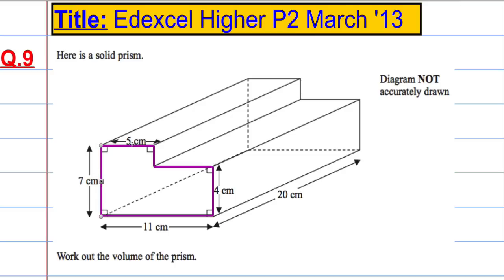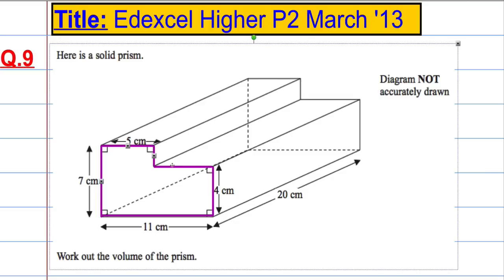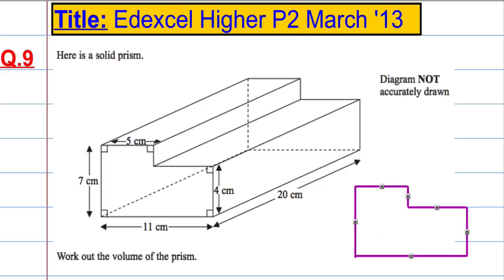So we don't even have to remember anything here. I'm just trying to make a little sketch of our front face. We can see that this height here is 7 cm, the top is 5 cm, the bottom is 11 cm, and this height here is 4 cm.